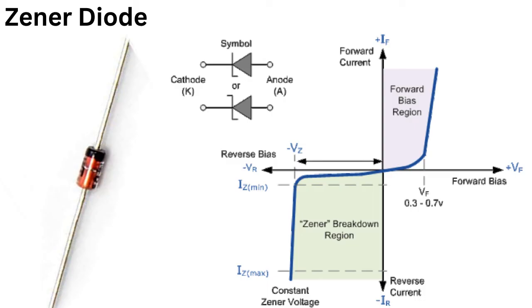In summary, a Zener diode is a special type of diode that is designed to operate in the reverse breakdown region, allowing it to maintain a constant voltage across it regardless of the current flowing through it.